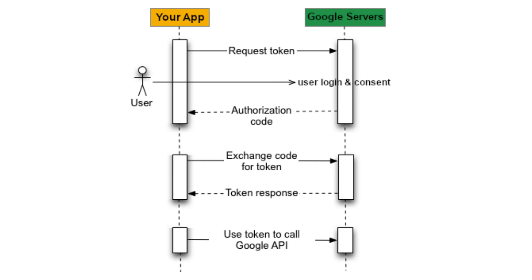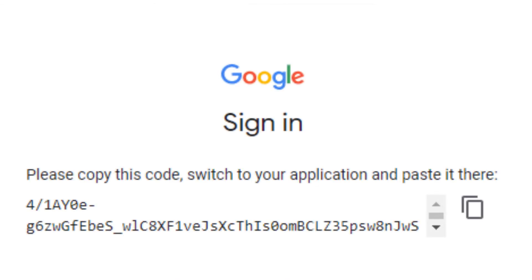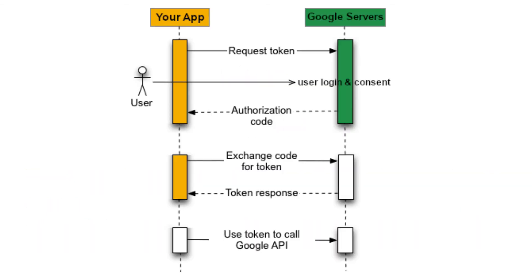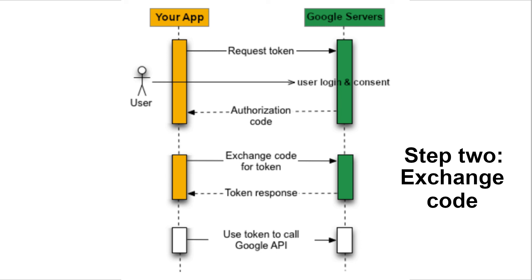So let's have a look at that image again. The user logs into our application. We display them the consent screen on the OAuth server. The user grants access and the OAuth server gives us an authorization code. We then take that authorization code and exchange it with the client ID and client secret on the server for an access token and a refresh token. We have an access token and refresh token now — we technically have access. So let's have a look at how to use that access token.